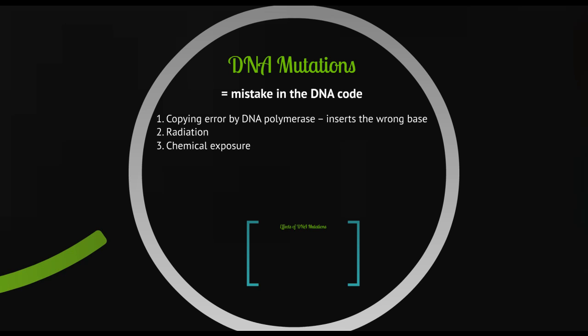The other source of mutations is radiation and chemical exposure. Both of these physically knock nucleotides out of the DNA sequence. Radiation waves will hit a nucleotide and knock it out of the code completely. With chemical exposure, chemicals will interfere with or react with a particular nucleotide so that it gets removed from the sequence.